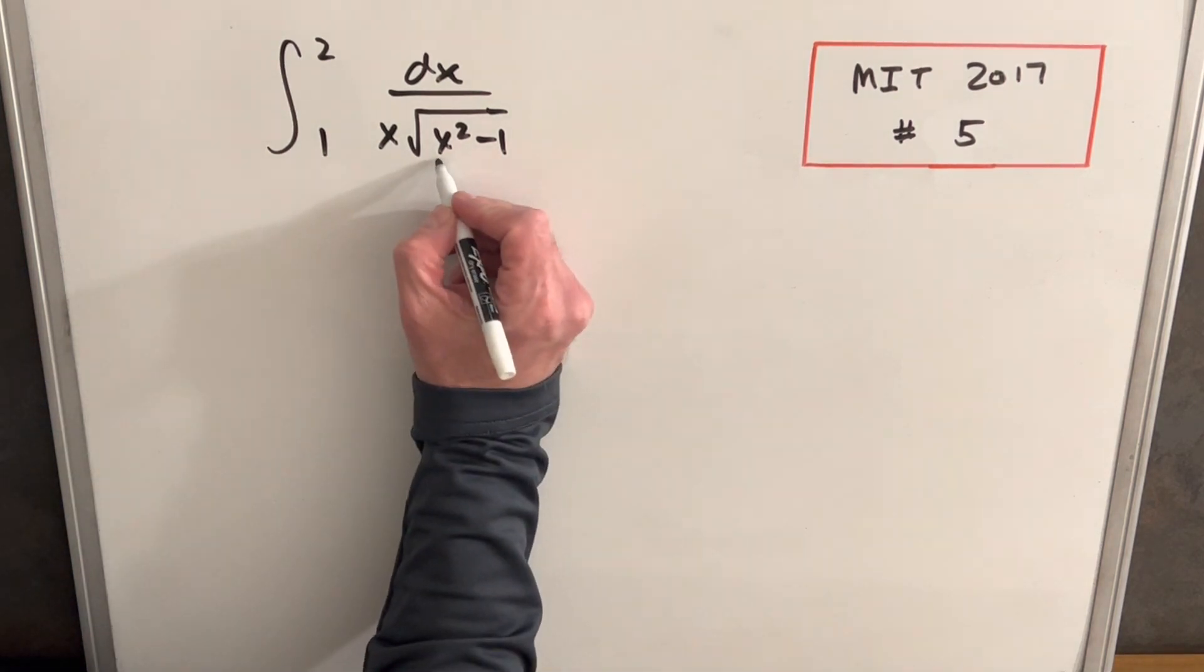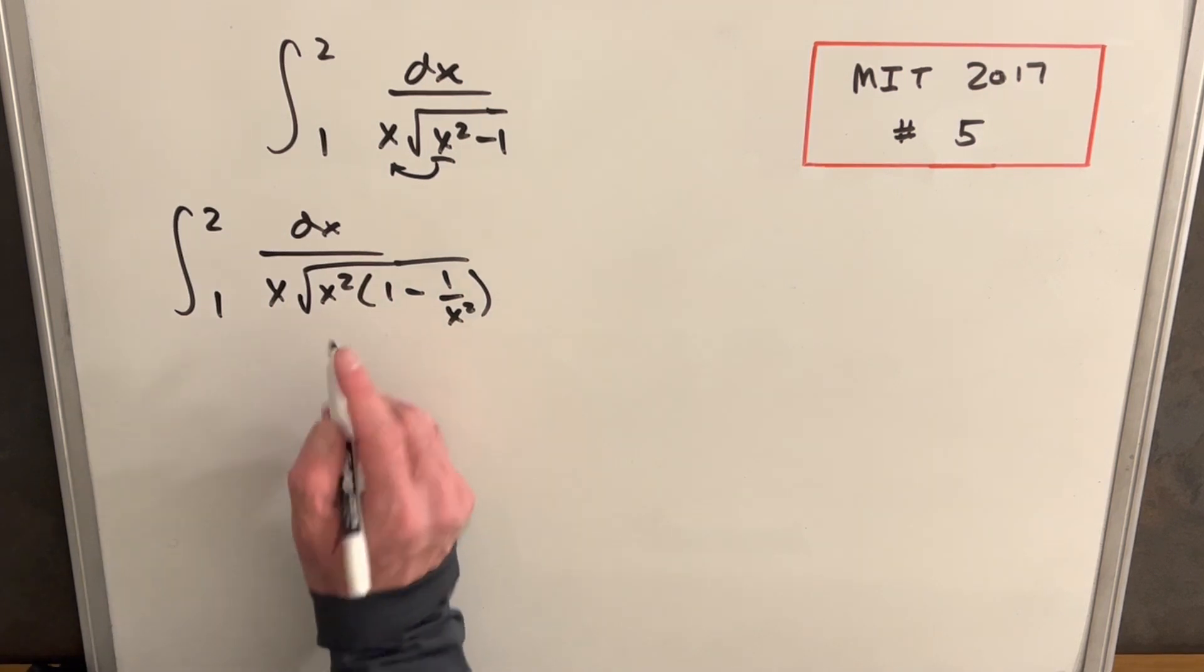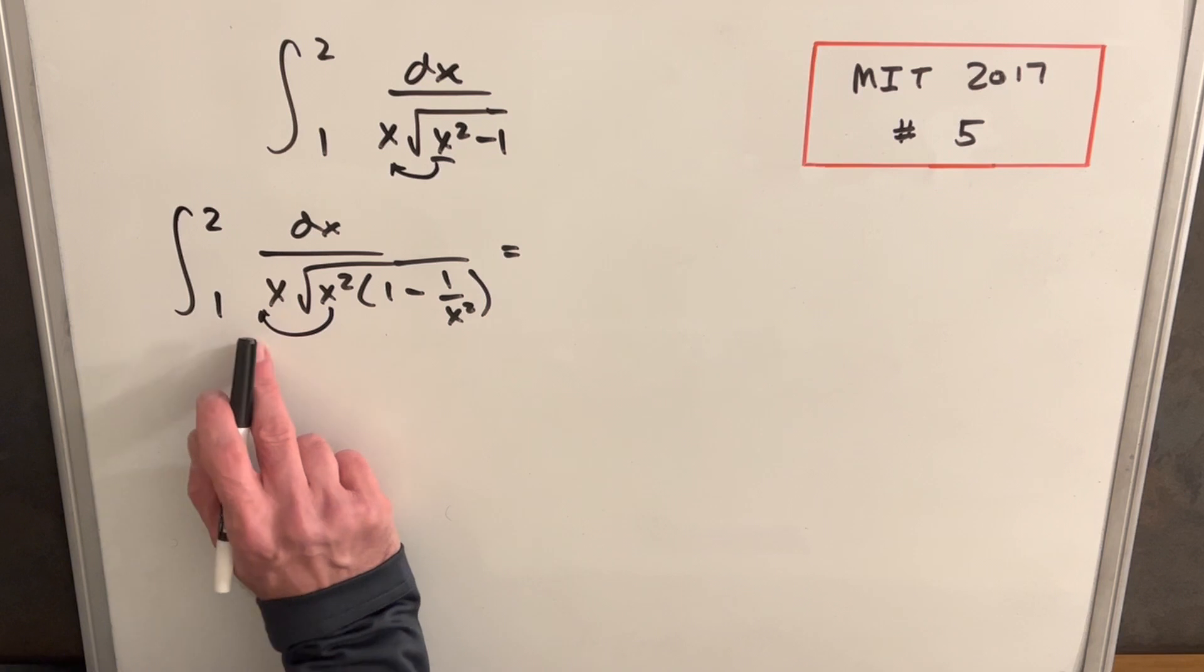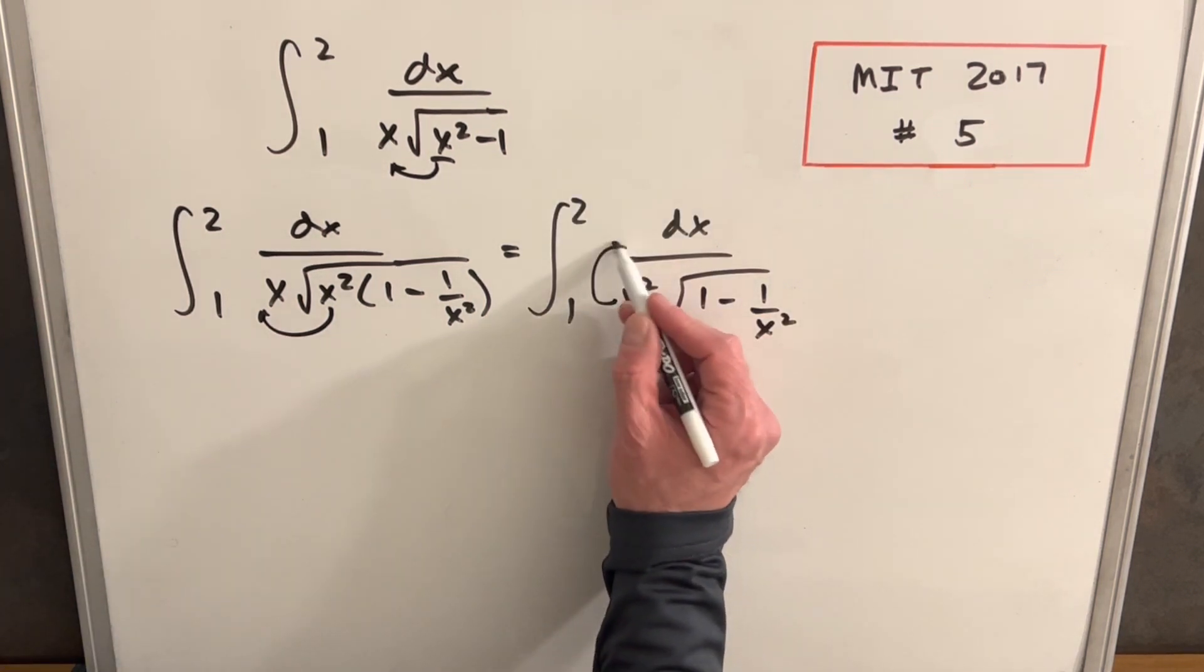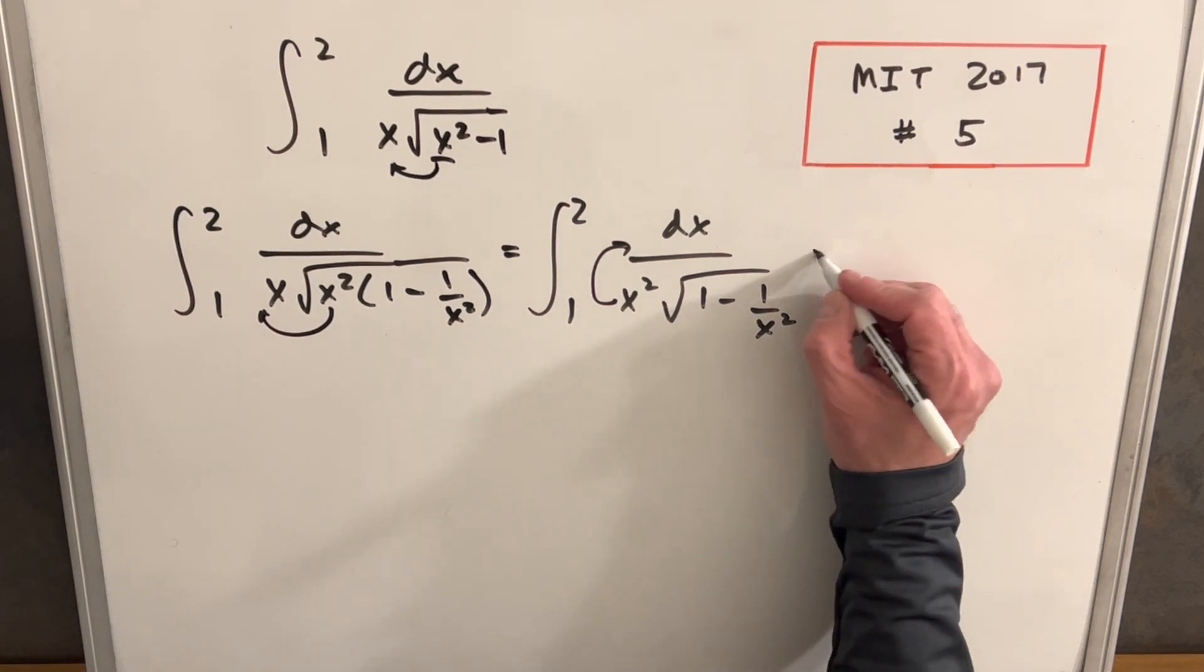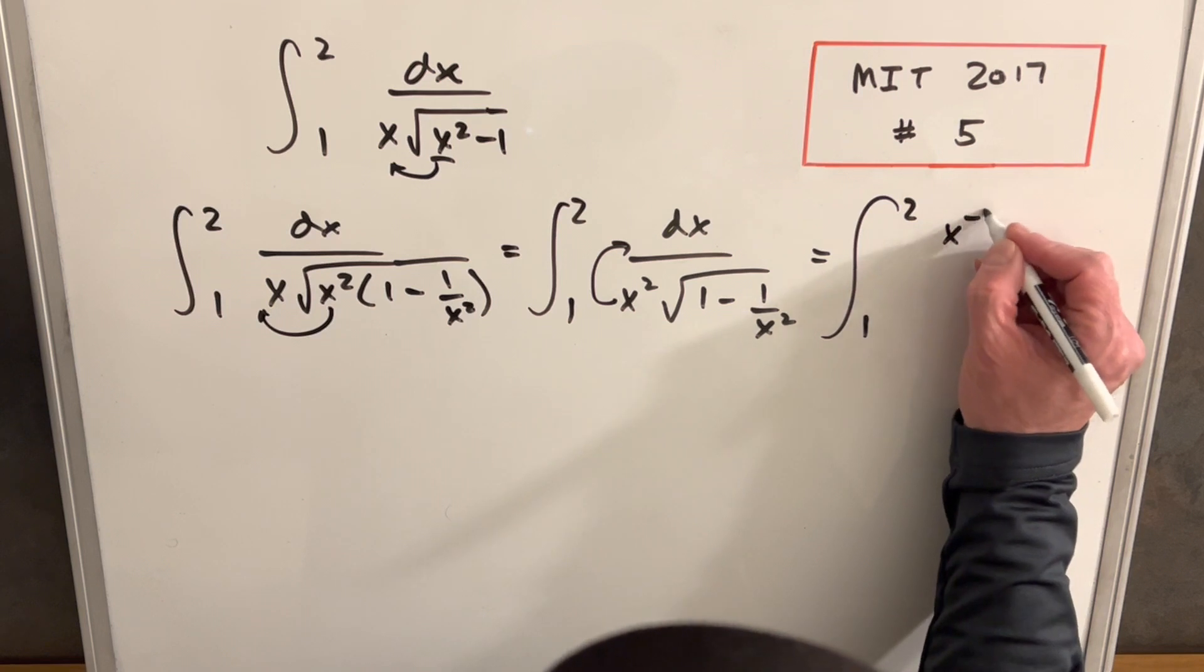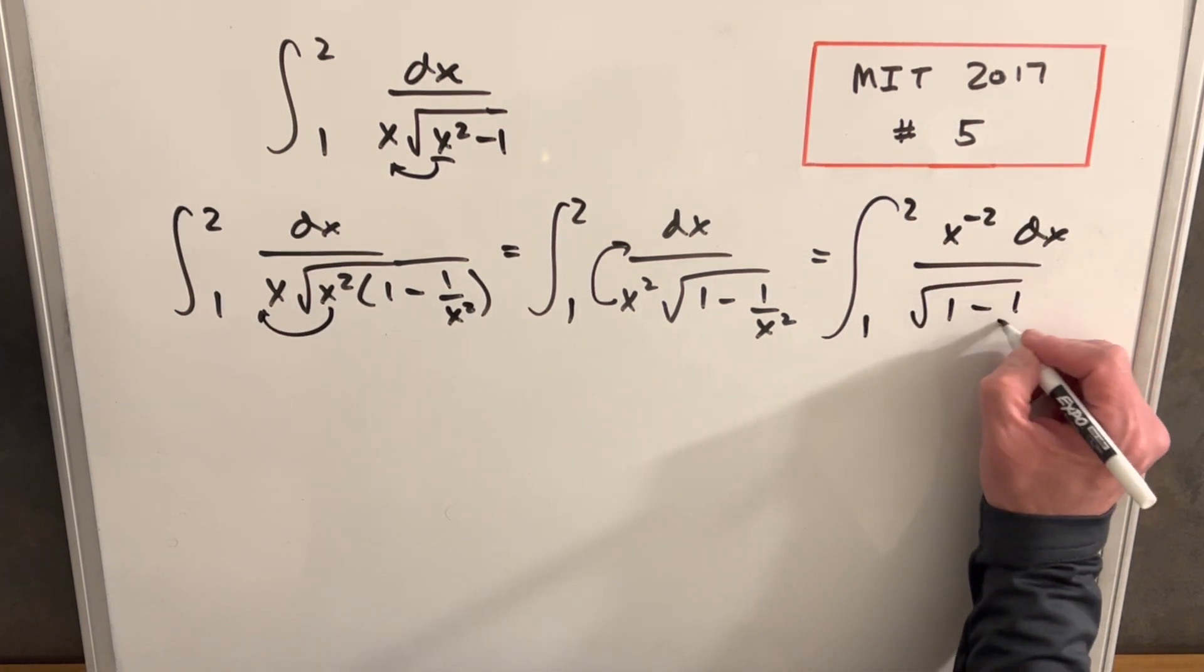So what I'm going to do is I want to factor out of here an x squared. So what I'll just do is we'll factor the radical this way. So if we take the square root of x squared and we bring out an x, this term is going to become an x squared. But then I just want this in the numerator because it's going to help us when we try to do a u sub. So again, I'll rewrite this. We'll have two to one x to the minus two dx over the square root of one minus one over x squared.